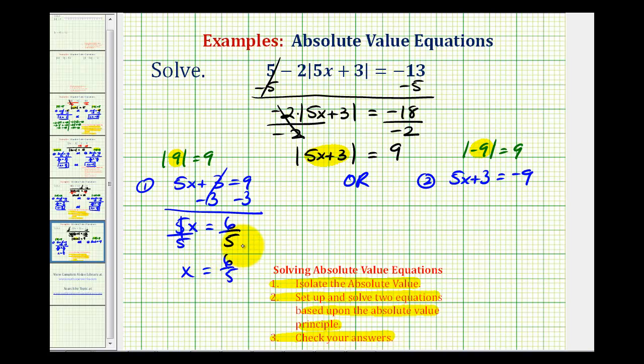For the second equation, we'll subtract 3 again, so we have 5x equals negative 12. Divide both sides by 5, so x equals negative 12 fifths.